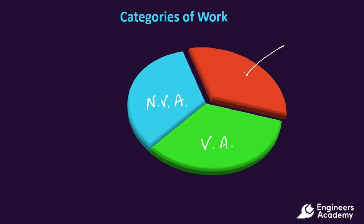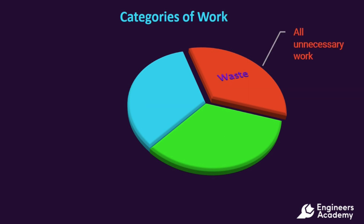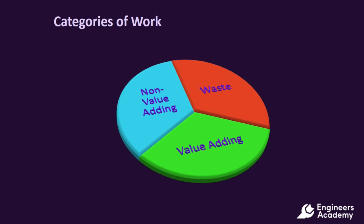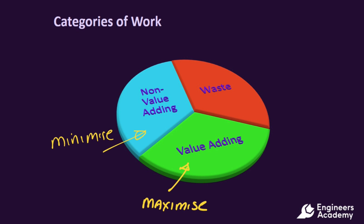Our final category of work is work that is neither Value Adding nor Non-Value Adding, and is therefore what we would term Waste. Waste is all work that is unnecessary. In Lean Manufacturing, our objective is to maximize all Value Adding activities, minimize all Non-Value Adding activities, and eliminate all Waste activities.